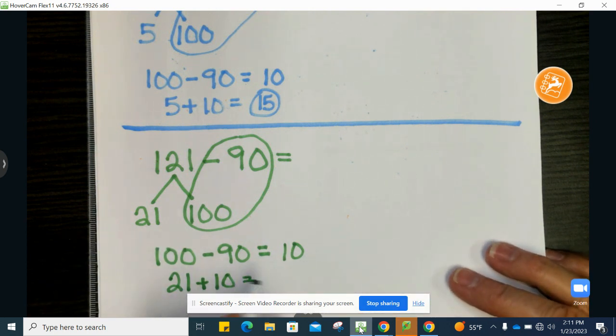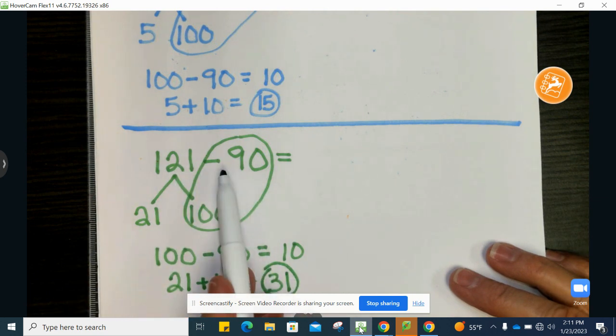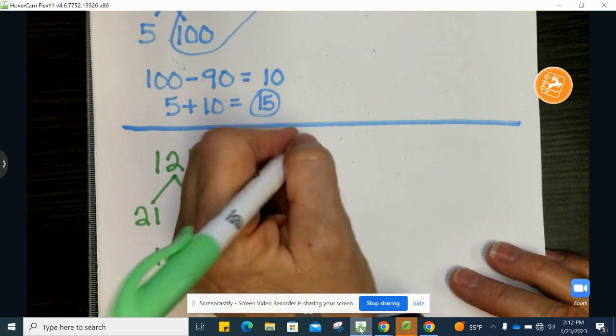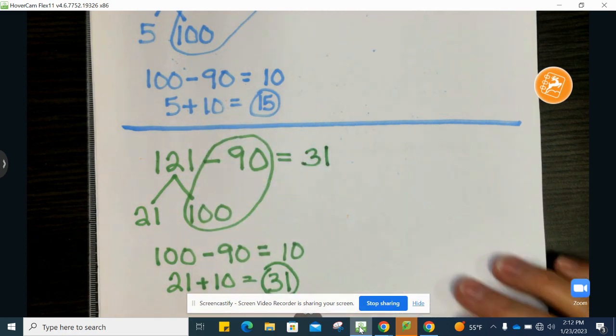It doesn't matter. 10 plus 21 is 31. So 121 minus 90 is 31.